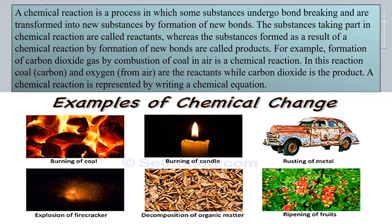For example, formation of carbon dioxide gas by combustion of coal in air is a chemical reaction. When coal burns in air, carbon dioxide gas is created. This is a chemical reaction that is actually happening — a new product, carbon dioxide gas, is released because of the burning of coal in the presence of air. In this reaction, coal (carbon) and oxygen from air are the reactants, while carbon dioxide is the product.